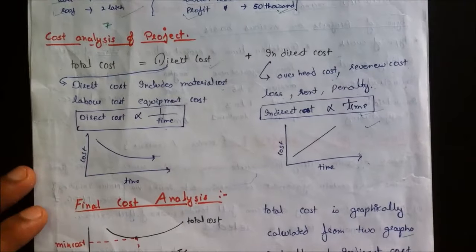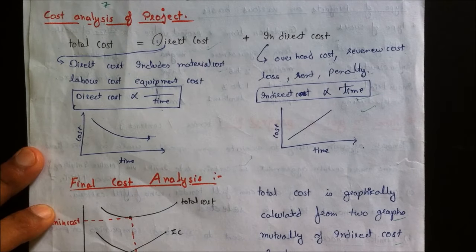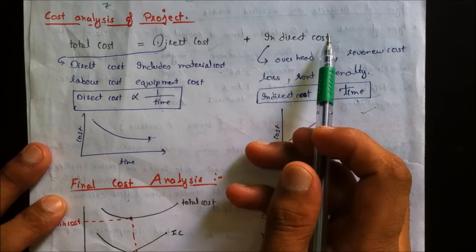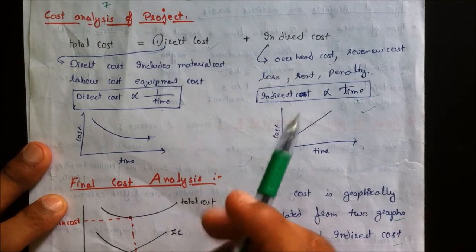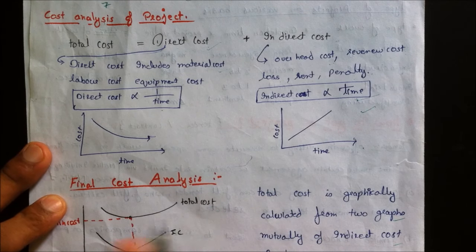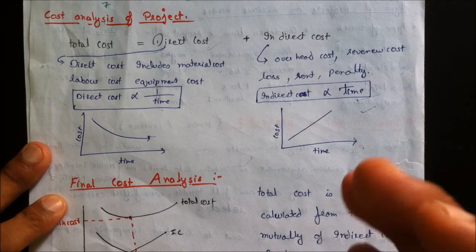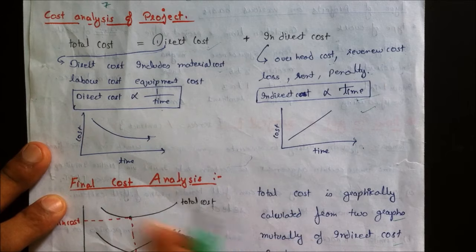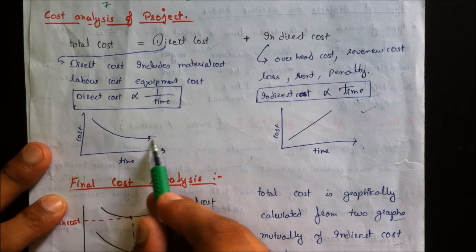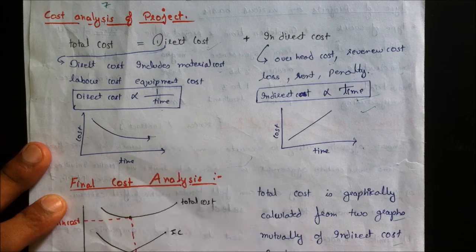In cost analysis we determine the total cost of the project. Total cost equals direct cost plus indirect cost. Direct cost includes material cost, labor cost, and equipment cost. Direct cost is inversely proportional to time — for a longer project, fewer pieces of equipment are needed, whereas a short-duration project requires more equipment running in parallel, increasing cost.